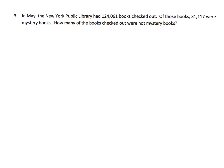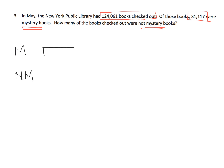Let's speed this along. It says the New York Public Library had 124,061 books checked out. Of those books, 31,117 were mystery. How many of the books checked out were not mystery? One way to think of this: you have mystery and you have not mystery. I'm going to draw a tape for each of these. 31,117 books is our mystery number.